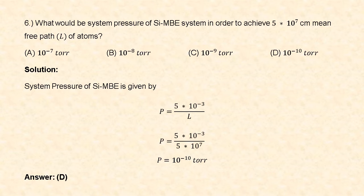Next question: what would be the system pressure of a silicon MBE (molecular beam epitaxy) system in order to achieve 5×10⁷ cm mean free path L of atoms? The formula for system pressure is P = 5×10⁻³ / L. Substituting L = 5×10⁷, we get P = 10⁻¹⁰ Torr. So answer D is correct.